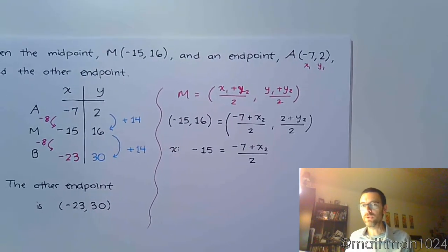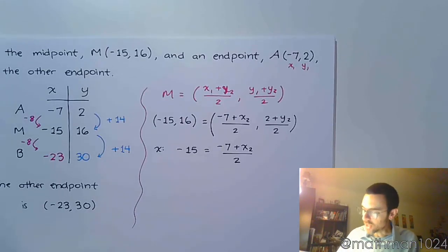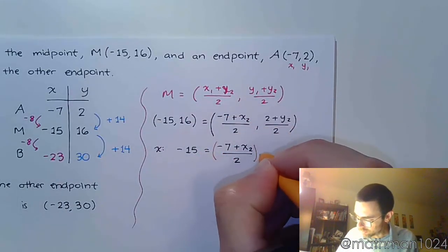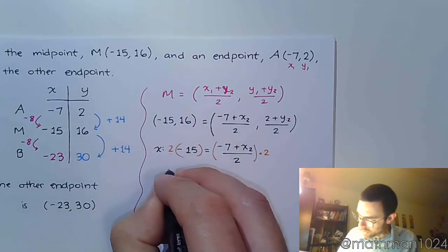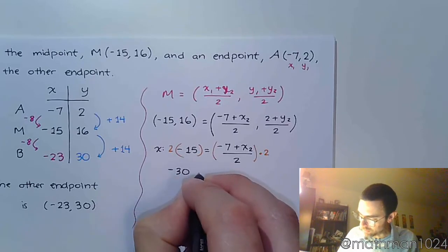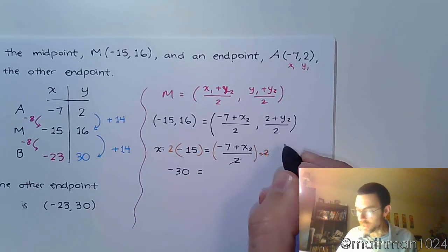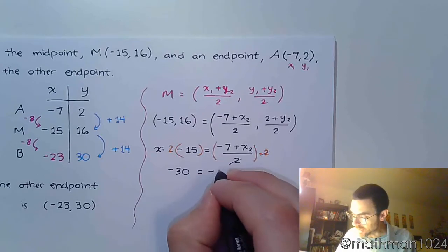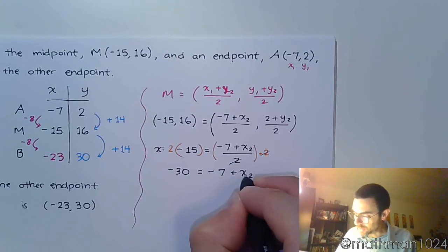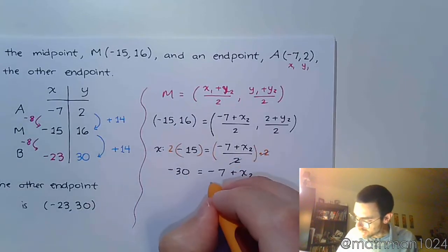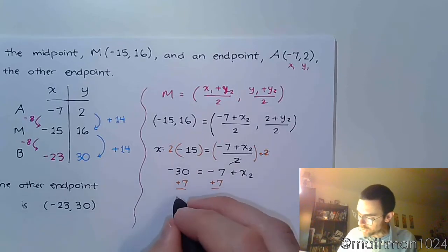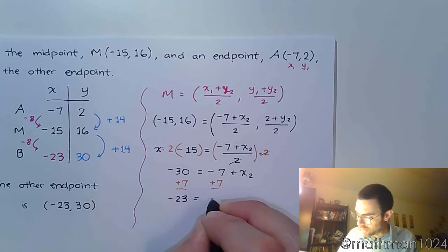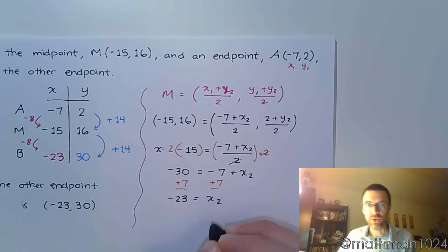Let's multiply both sides of the equation by 2. So you have negative 30 is equal to, now these guys reduce away, that's really nice, negative 7 plus x2. Add 7 to both sides, and you find out that negative 23 is equal to that other x coordinate, which is the same thing we already have here, just with a lot less work.